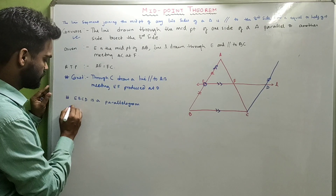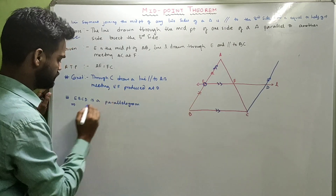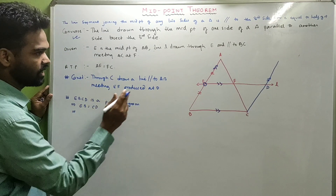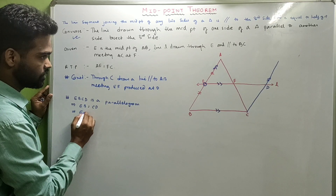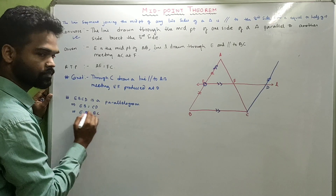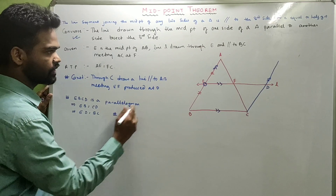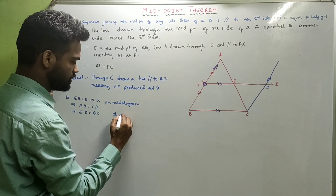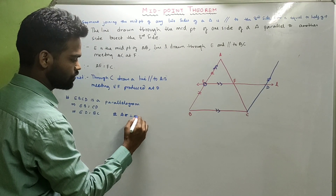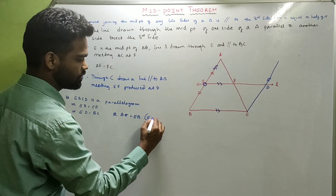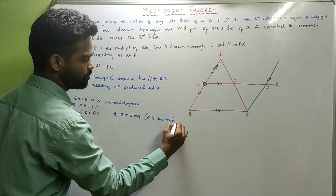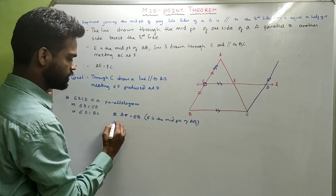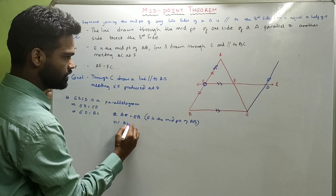Since EBCD is a parallelogram, opposite sides are equal: EB equals CD, and ED equals BC. Now E is the midpoint of AB, so AE equals EB. And EB equals CD (already proved). Which means AE is equal to CD.